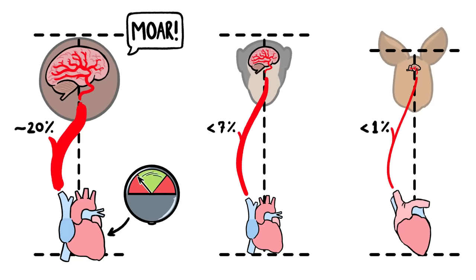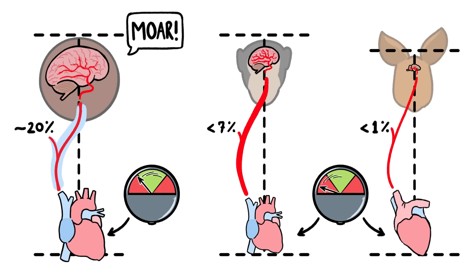That's why just a slight dip in our blood pressure can interrupt the flow of blood to our brain, while even a significant drop in other animals' blood pressure won't stop their brains from getting enough blood to keep running. Or hopping.